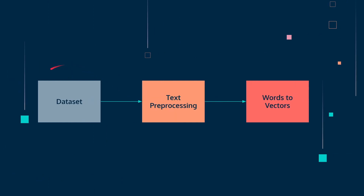Here are some of the steps we will take in text pre-processing our dataset. First, we'll get our dataset, then we'll do text pre-processing — we talked about this in the last video, and we're going to review it by coding it up today. We're also going to cover the third step, which is words to vector, today as well.